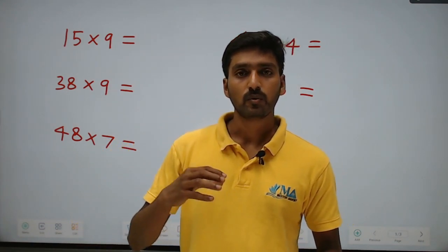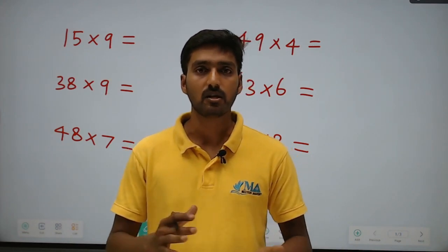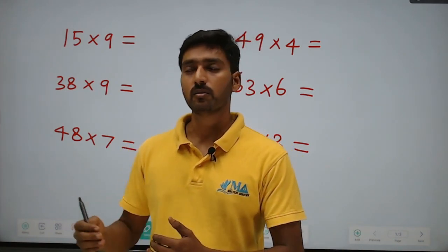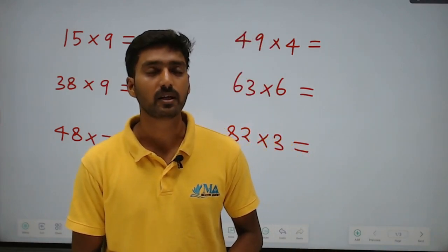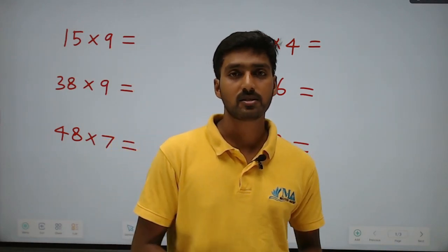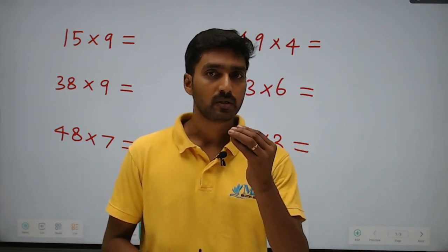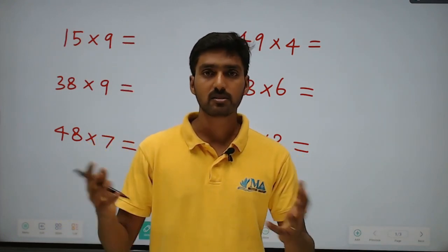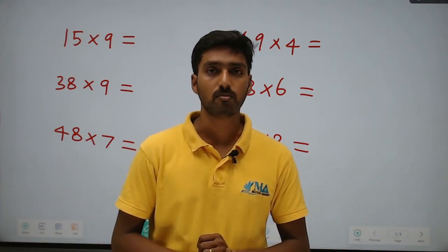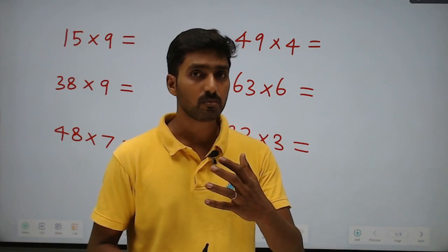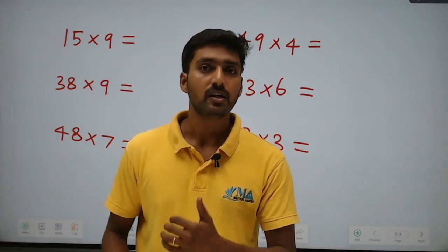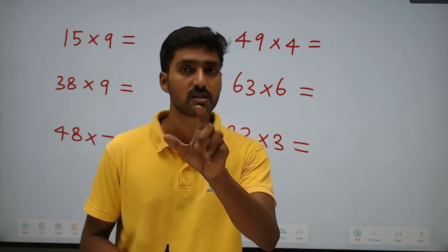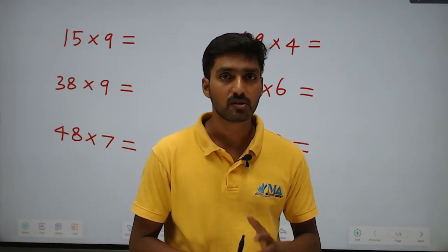For example, in each and every problem we have three to four multiplications or divisions, square roots or calculations that you can do. Normally, a two-digit into two-digit multiplication takes 15 seconds. With shortcuts, you can crack it in 5 seconds — saving 10 seconds. If there are three multiplications in a single problem, you save 30 seconds. With 10 questions, each saving 30 seconds, that equals 5 minutes saved.